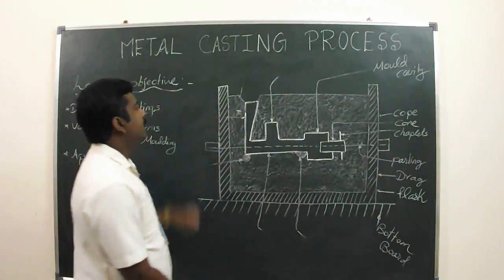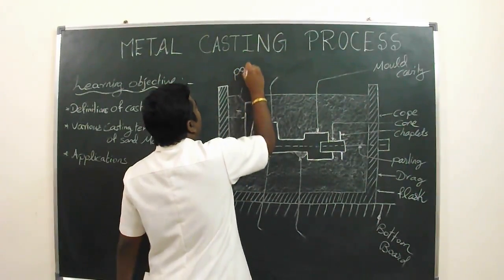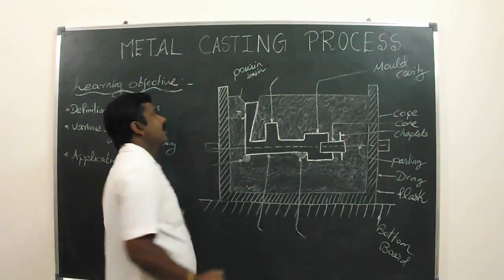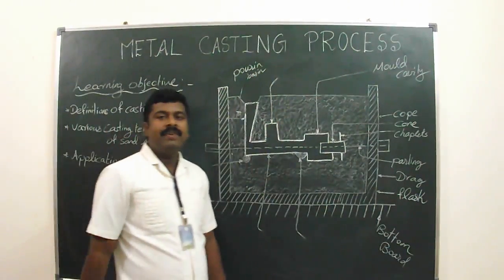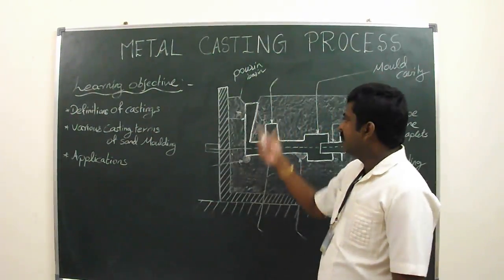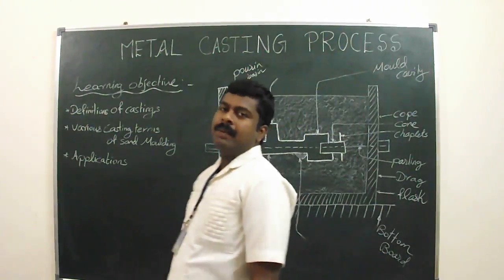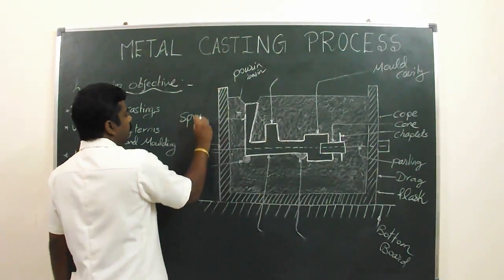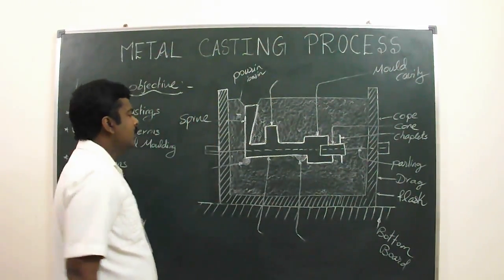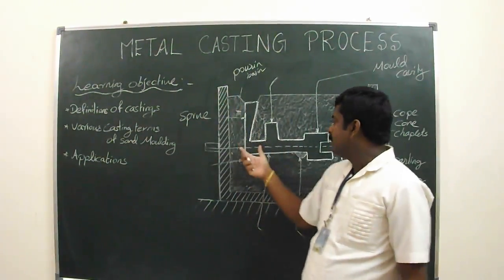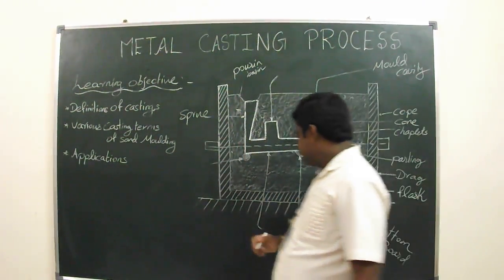Next one is the pouring basin. Pouring basin is the funnel-shaped cavity. It is placed at the top of the mold which is used to pour the molten metal. And next one is the sprue. Sprue is the passage of molten metal from the pouring basin to the mold cavity.